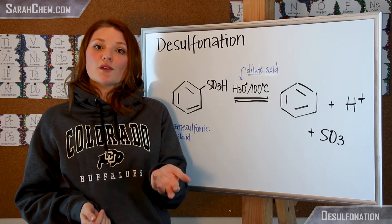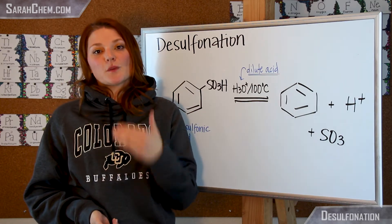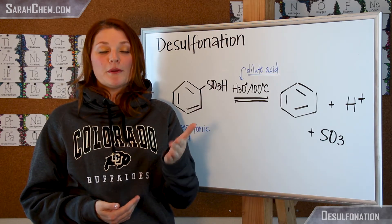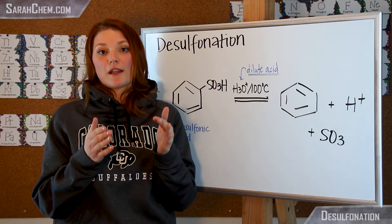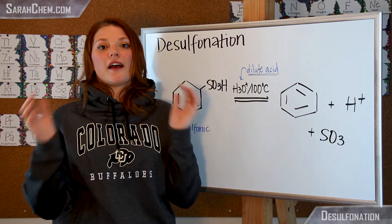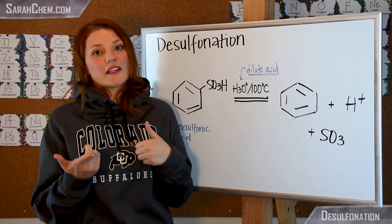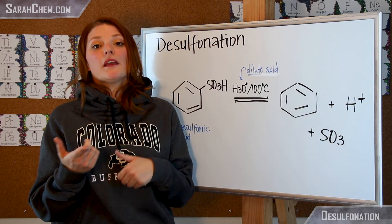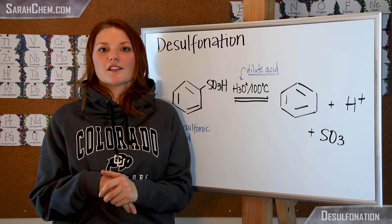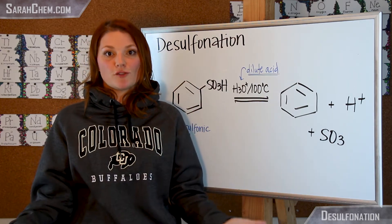Now this is actually really useful in terms of synthesis, because what you can do is add a sulfonic acid group to your benzene ring that will specifically direct a new electrophile into a particular location, and then all you have to do is heat up that system in dilute acid to eliminate the sulfonic acid group from your ring and create the compound you want.